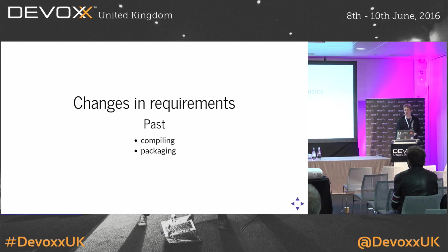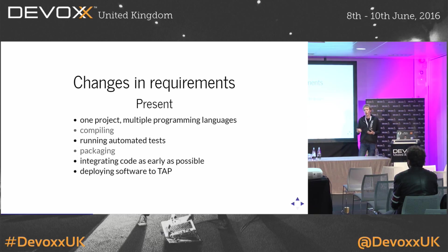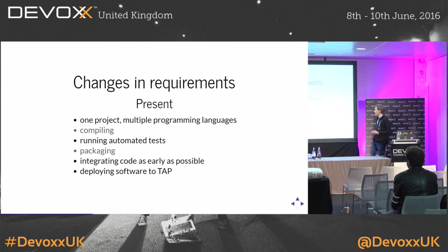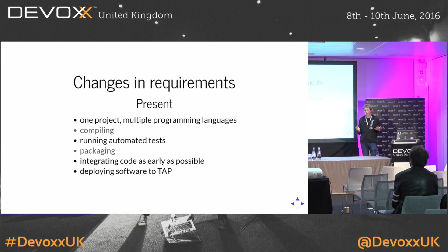This has changed in recent years because your project can contain multiple programming languages. Just take a web application — you need a front-end language and a back-end language, and there also needs to be some database scripting. We want to run automated tests as fast as possible and integrate code as early as possible. And finally, we want to deploy our software to test, acceptance, and production environments as often as we can. So build tooling should really have more functionality than just compiling and packaging.